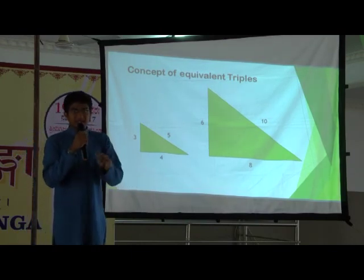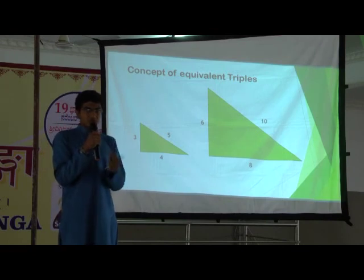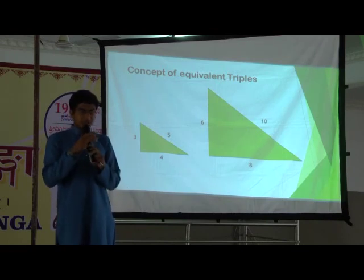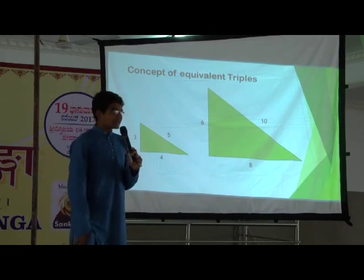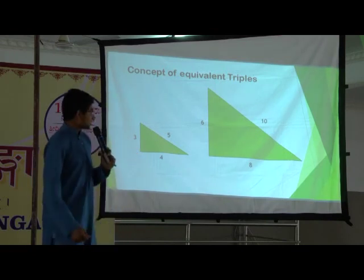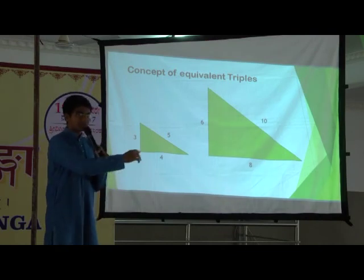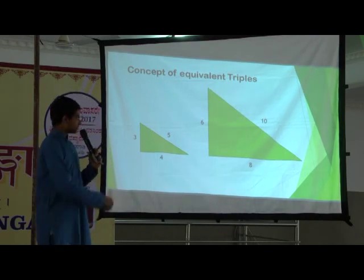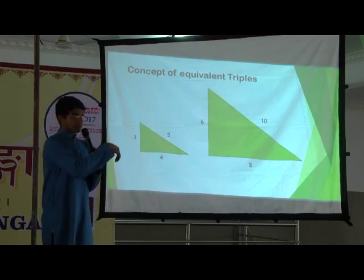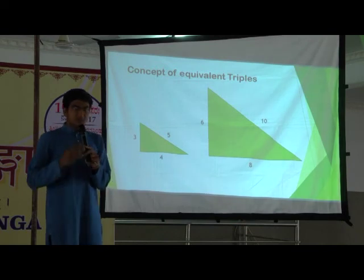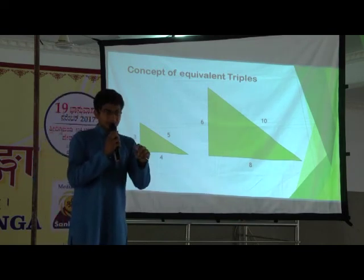Now this system is more application-based. If you want to find sin 30, there's a long derivation. But if I want to find the sine of a 4, 3, 5 triangle, it is simply 3 by 5. Cosine is 4 by 5. Tangent is 3 by 4. It's as simple as that.